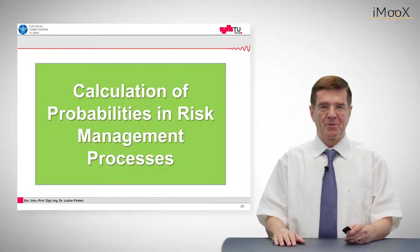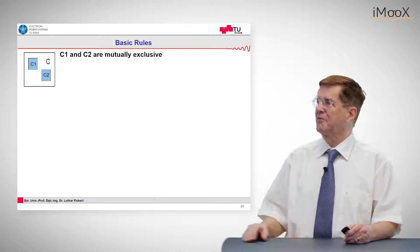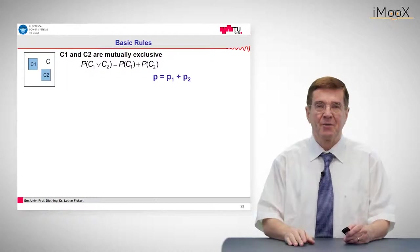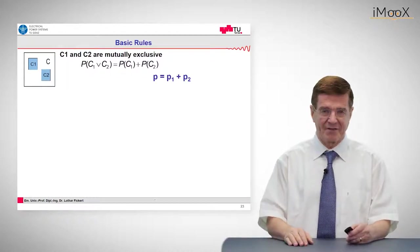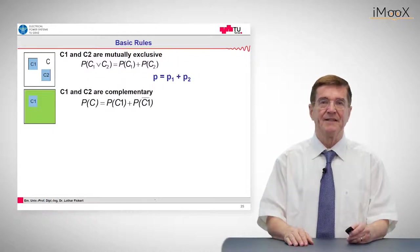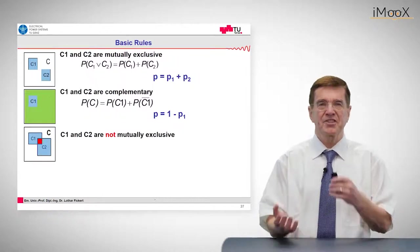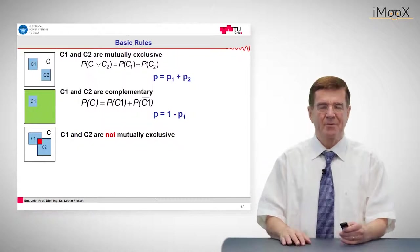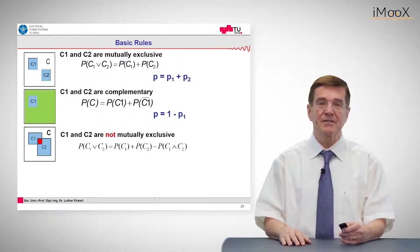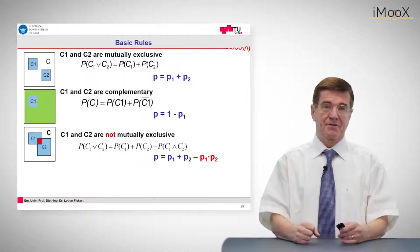The calculation of probabilities in risk management will be given in the following. The basic principles of probabilities are: if C1 and C2 are mutually exclusive, the probability you have either this or that is the sum of the two. If C1 and C2 are complementary, this is the well-known result. What is interesting is if either this or that occurs, the probability when these events C1 and C2 are not mutually exclusive is the sum of the probabilities minus the combined probabilities of the two.